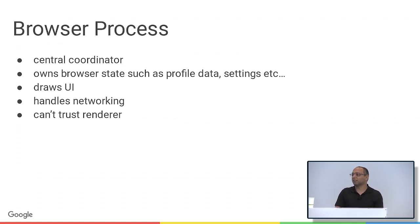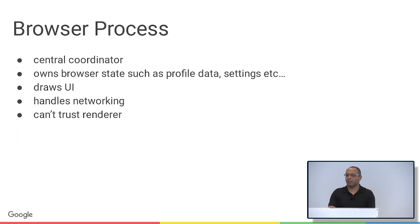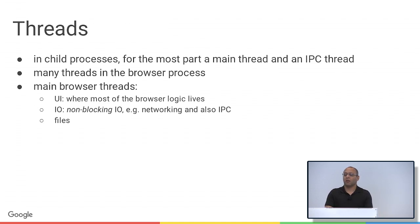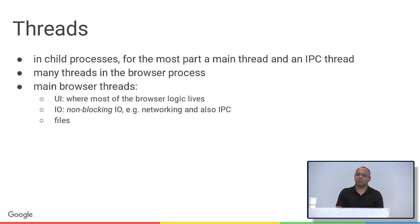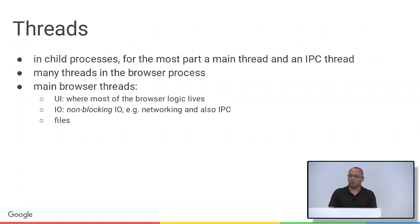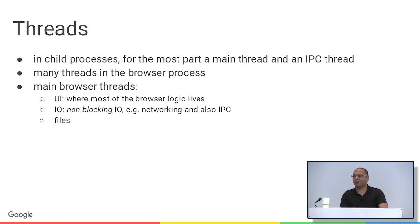The browser process is the central coordinator. It owns browser state like your profile data and settings, it draws the UI around the content area, and it handles networking. Since it's the most trusted, it can't fully trust all the other processes, because they could be trying to lie to it. In most processes there's at least one main thread and an IPC thread. The browser process also has many other threads for things like databases or offloading expensive work. The main threads are the UI thread — where all user interface code and logic runs — and the IO thread, which handles non-blocking I/O only, never disk access or expensive operations.